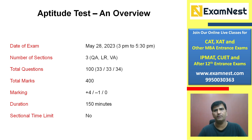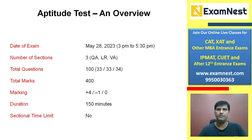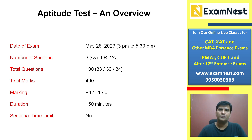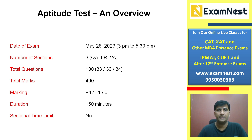Sectional cut-off हाँ होती है पर वो काफी nominal value होती है। IIM Jammu या IIM Bodh Gaya किसी ने भी high cut-off decide नहीं की है। Ultimately आपका overall score matter करता है। 400 marks का paper था — हर correct answer पर plus 4 marks, गलत पर minus 1, और unattempted question पर कोई marks नहीं।